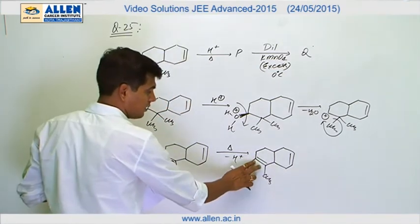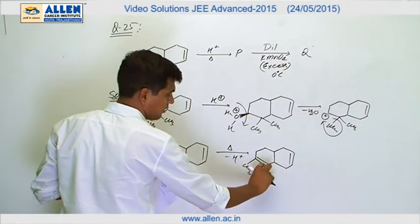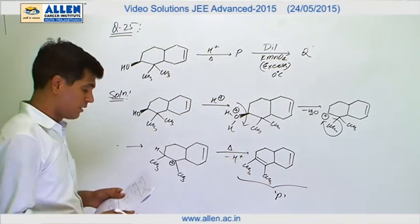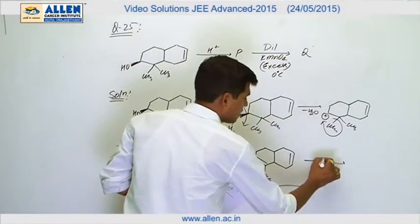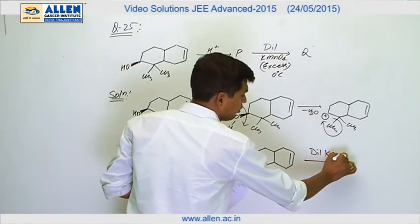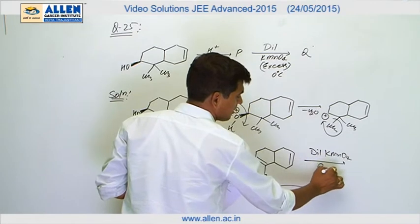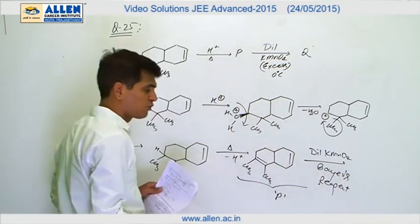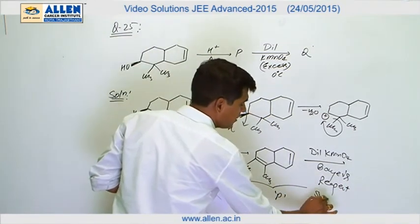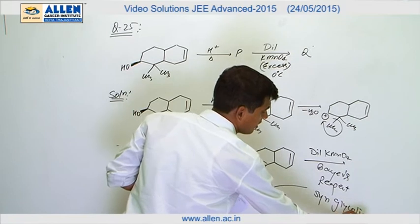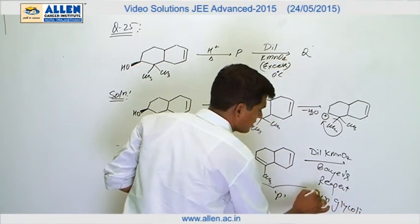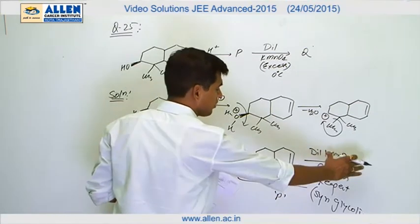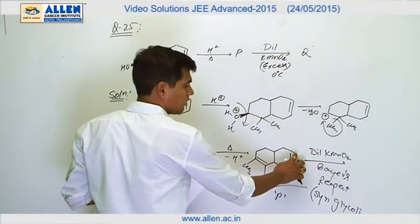Either here, or here, or here — we can consider this as product P. Dilute KMnO4 is also known as Baeyer's reagent, which is used for syn glycolization. Here we are not going to discuss stereochemistry; we are looking only for the number of OH groups obtained in the product.